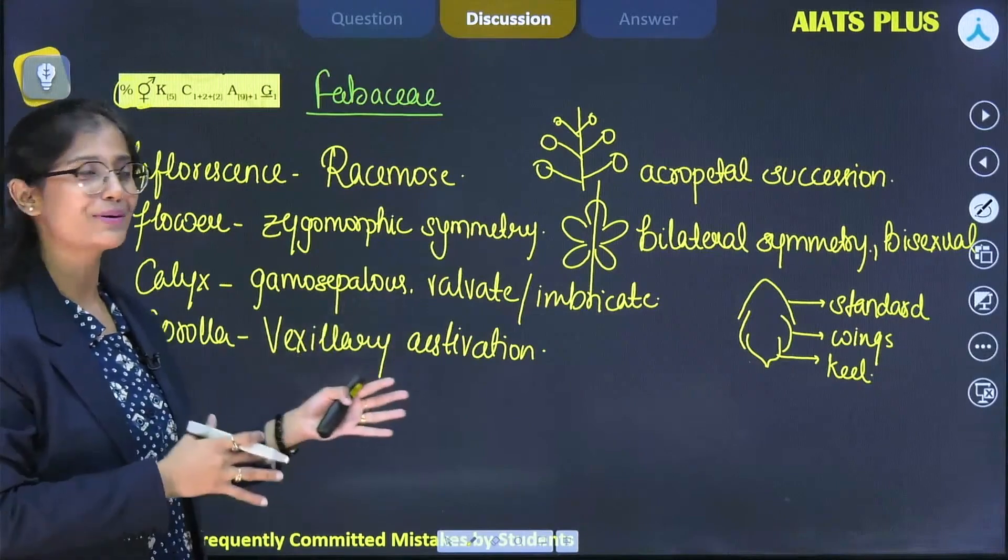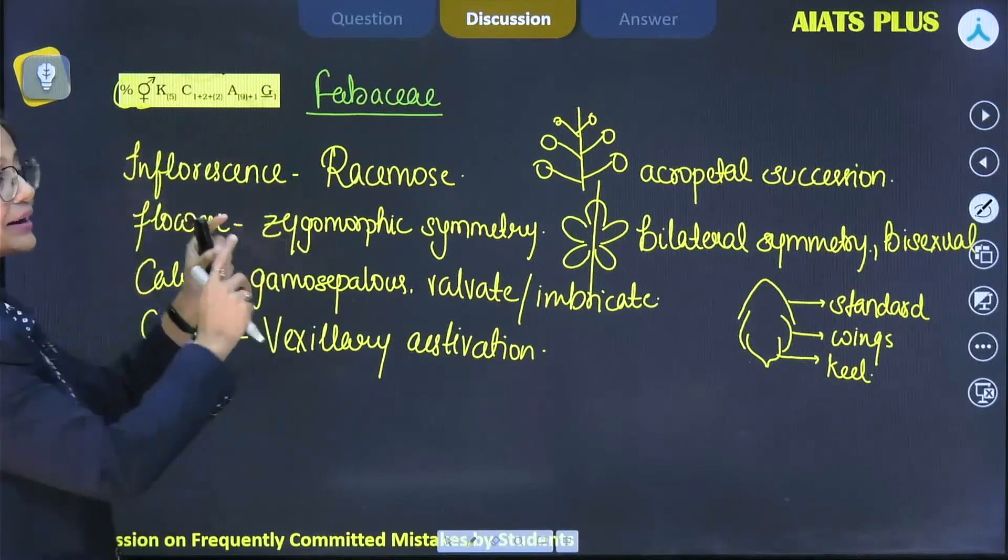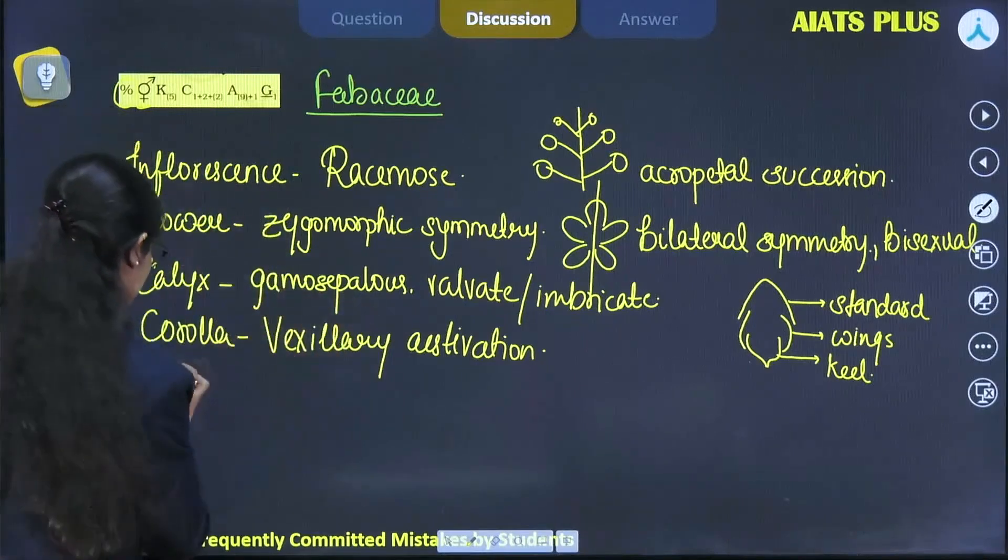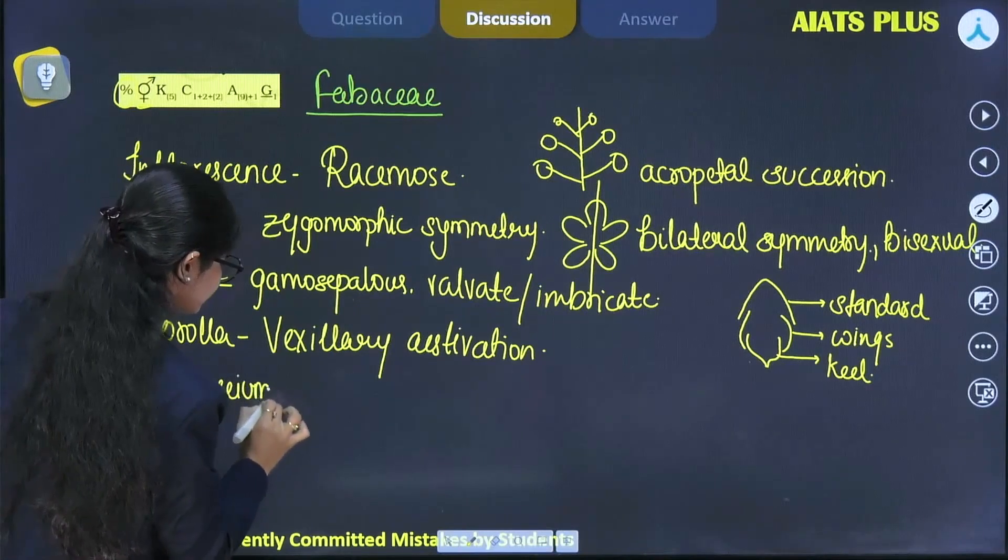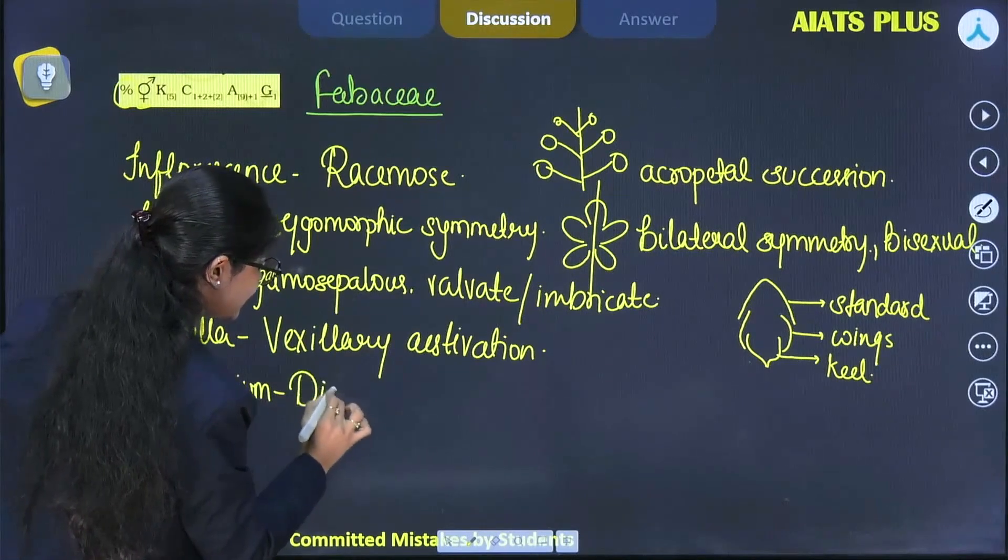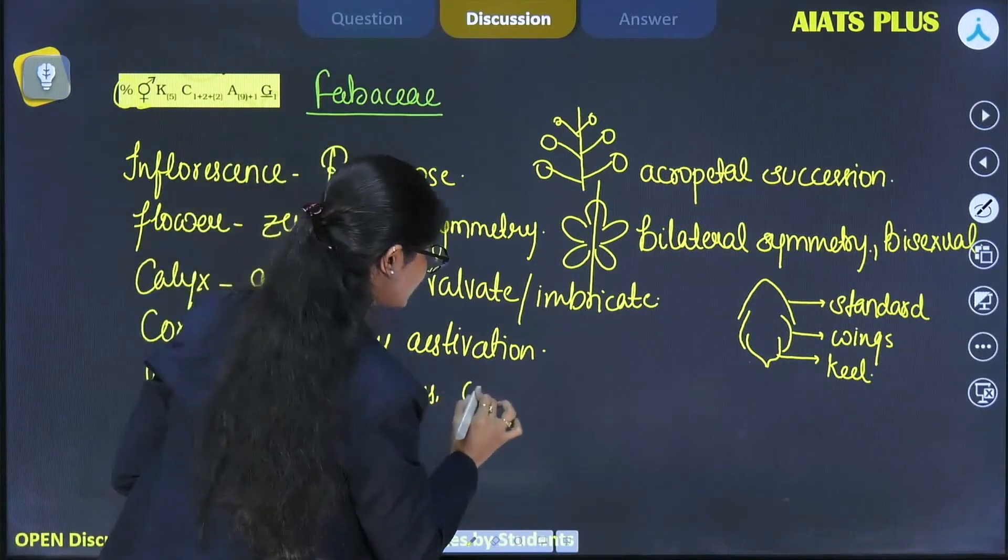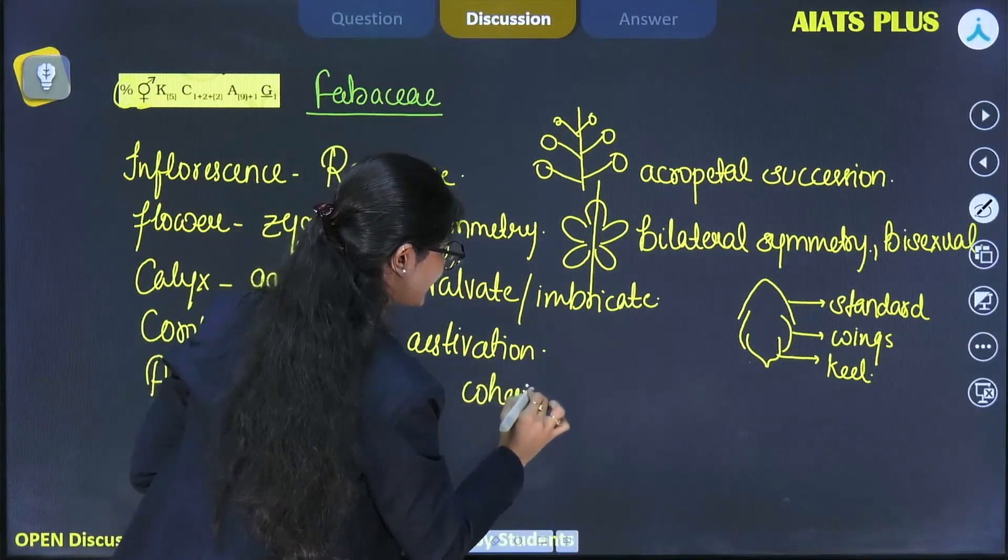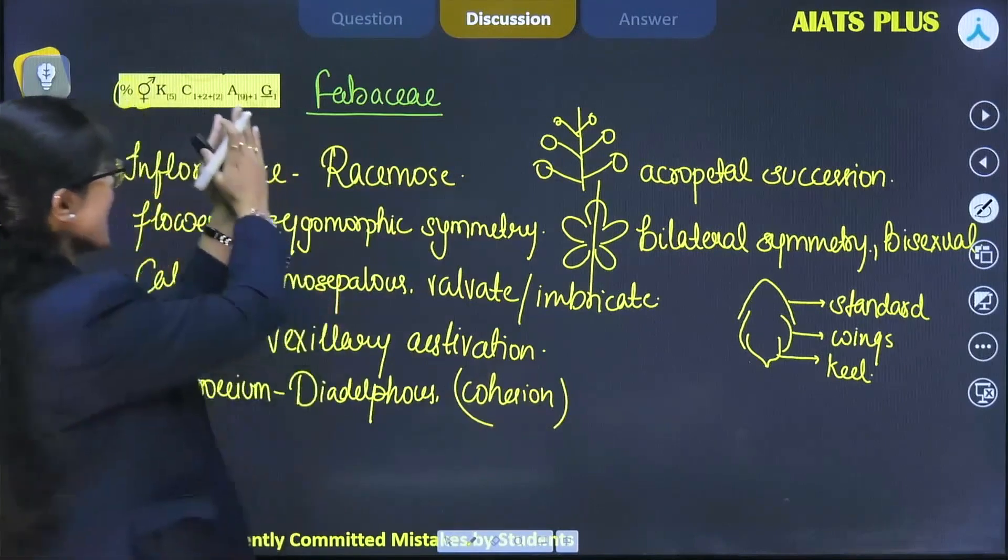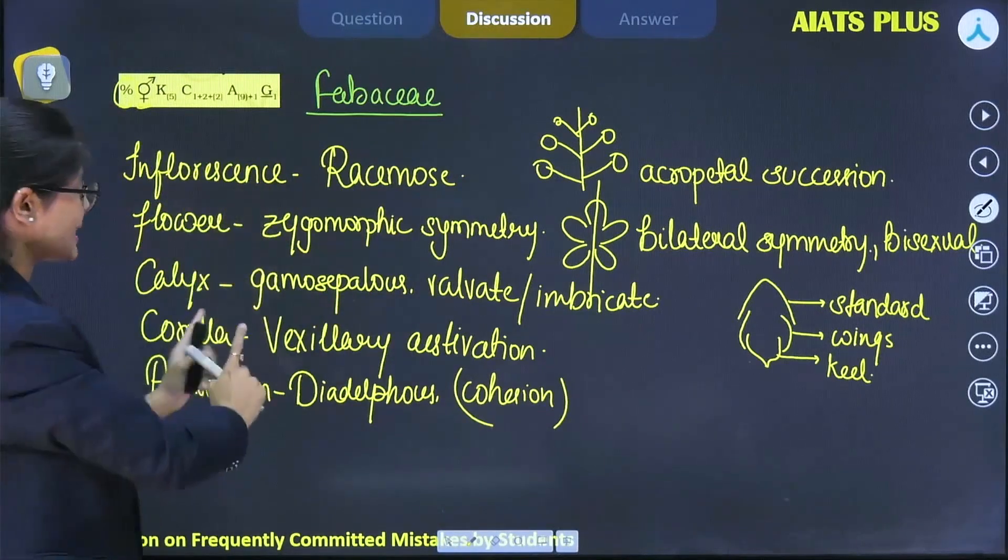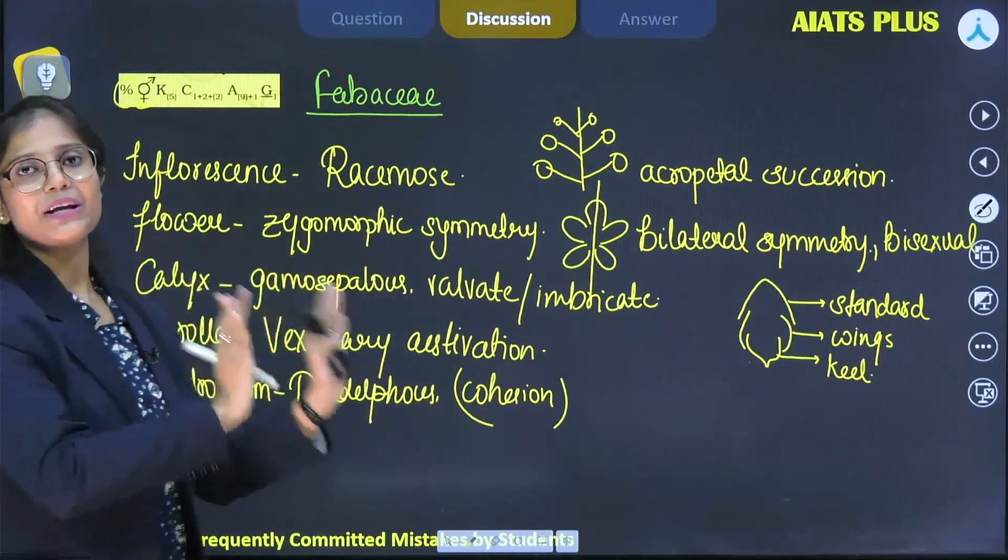Now next is androecium. Here we can see that androecium are in two bundles, meaning they are diadelphous. This condition is cohesion of stamens - stamens are in bundles. There are two bundles, that's why it's named diadelphous: nine stamens together and one separate, forming two bundles.